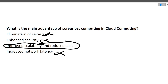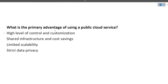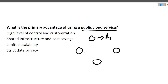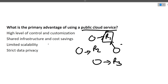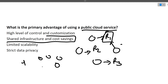The next question is: what is the primary advantage of using public cloud services? Multiple users share resources in a public cloud. For example, if user 1 finishes using resource 1, that resource becomes idle and user 4 can reuse it. So the answer is shared infrastructure and cost saving — it is not guaranteed that four users need four separate servers; idle infrastructure can be reused.